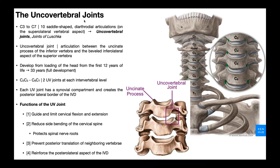The uncovertebral joints are really 10 saddle-shaped diarthrodial articulations. There are 10 because there are two at each level — left and right. They are also diarthroses, which means synovial joint. Some sources are hesitant to call these synovial joints, but as we'll see, they actually share similarities with synovial joints in that they have chondrocytes and synoviocytes present. The uncovertebral joints are also sometimes called the joints of Luschka.